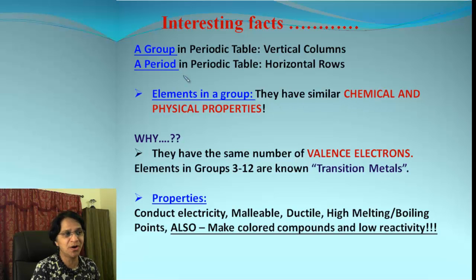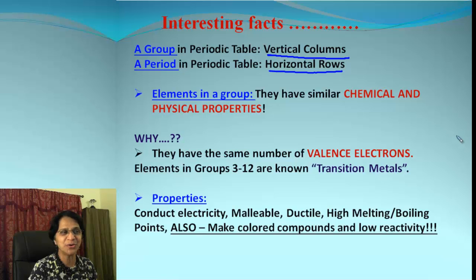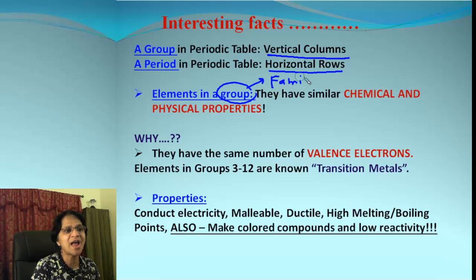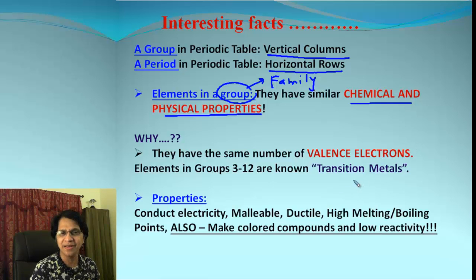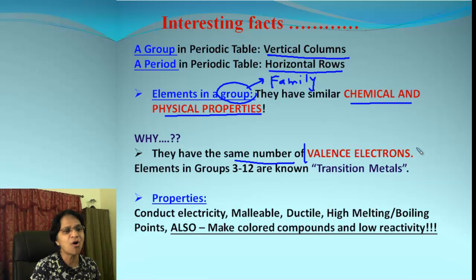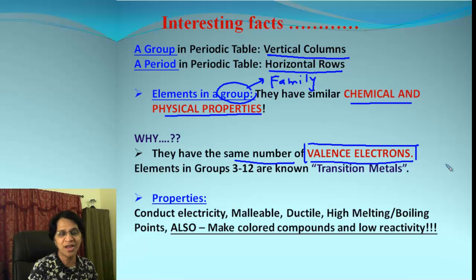Let's recap with some interesting facts. A group in the periodic table is a vertical column, and a period is a horizontal row. Elements in a group — which can also be called a family — have similar chemical and physical properties because they are identical in family. Why does this happen? It goes back to electron structure: they have the same number of valence electrons. We will talk about this later, but keep in mind valence electrons play a very important role in the properties of elements.